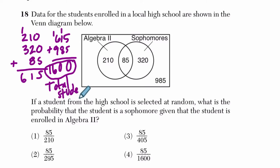Now, what do they want us to solve? All right, if a student from the high school is selected at random. Okay, so pay attention, here we go. The student from the high school, from the whole high school, is selected at random. What is the probability that a student is a sophomore given that the student is enrolled in algebra 2? Wow, that's a lot to unpack.